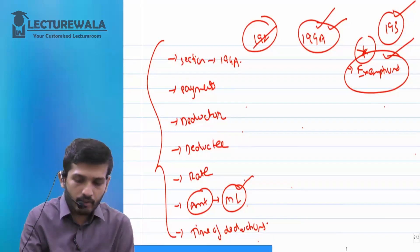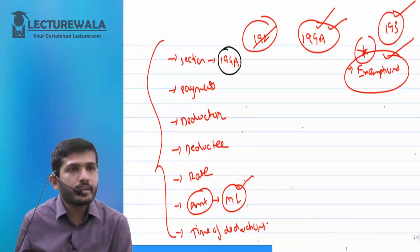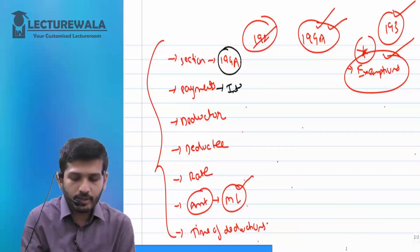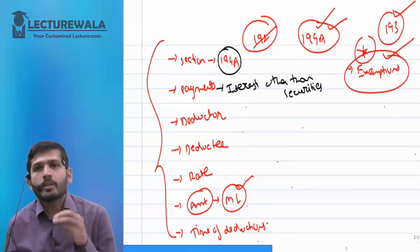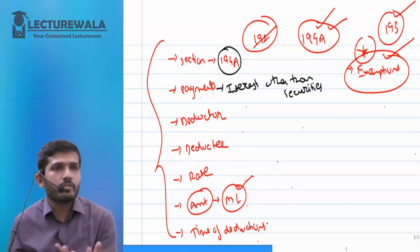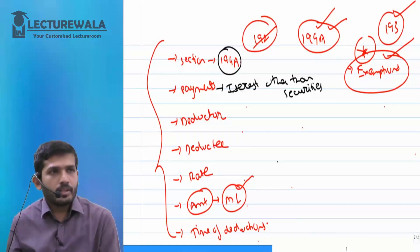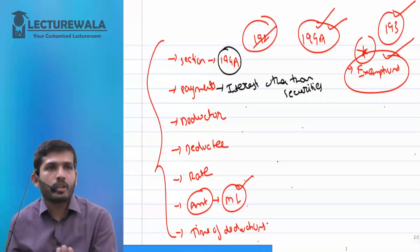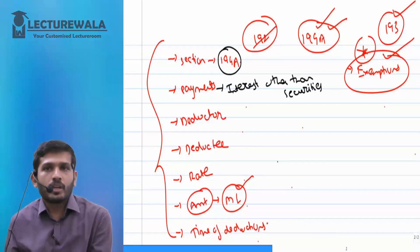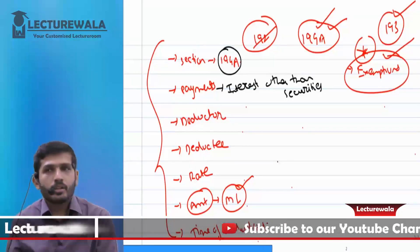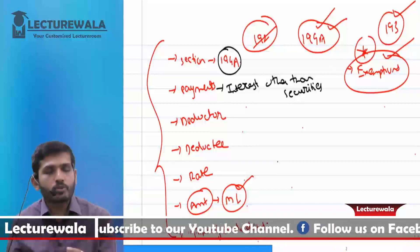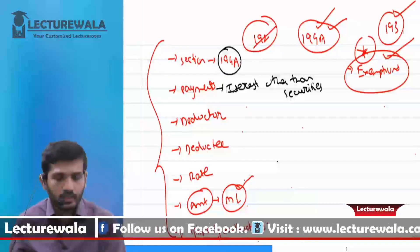So under section 194A, the section number is 194A. What is covered here? Any interest paid, but other than on securities. Interest on securities goes under 193 — leaving that aside, everything else is here. For example, if I have taken a loan from a friend for business and I pay him interest — that will be covered. Or if I put a fixed deposit in a bank and the bank pays me FD interest — yes, because FD is not a bond or debenture. But if I buy a company's debentures and receive interest on those debentures, that TDS will happen under section 193.